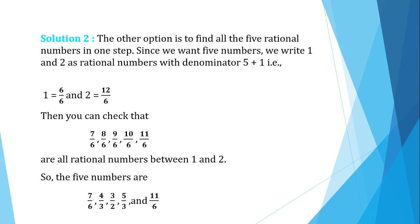The other option is to find all 5 rational numbers in one step. Since we want 5 numbers, we write 1 and 2 as rational numbers with denominator 5 plus 1, which is 6.